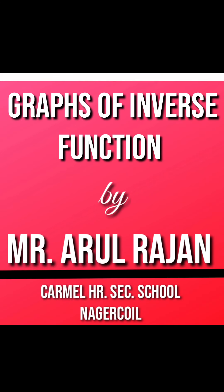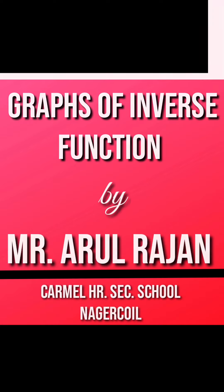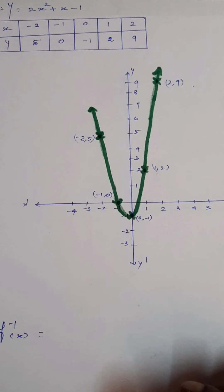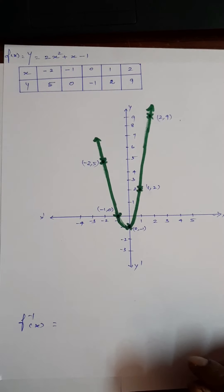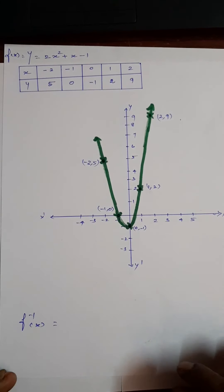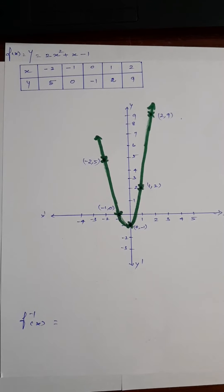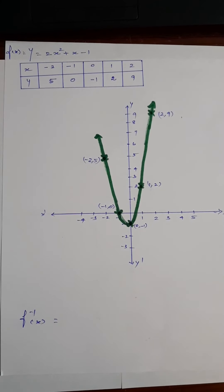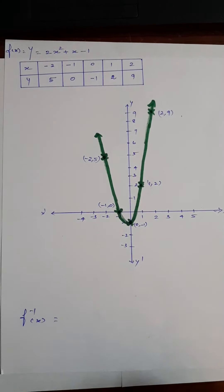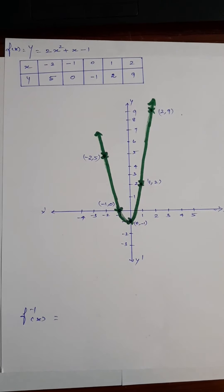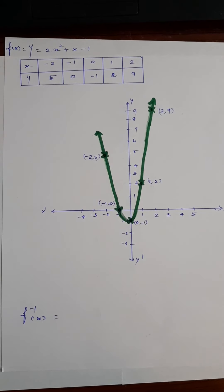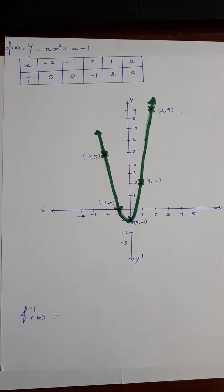I am going to graph f(x), that is y = 2x² + x - 1. I am going to calculate the values: x = -2, y = 5; x = -1, y = 0; x = 0, y = -1; x = 1, y = 2; x = 2, y = 9.